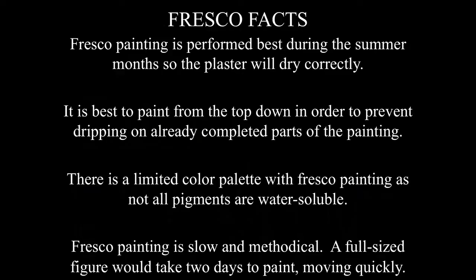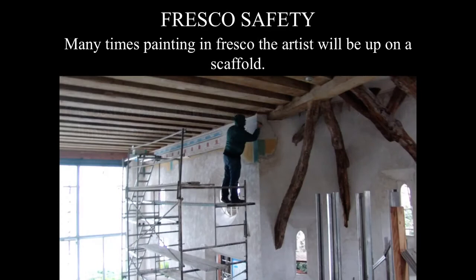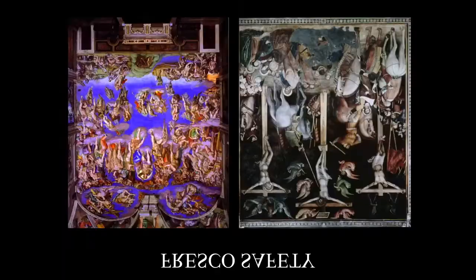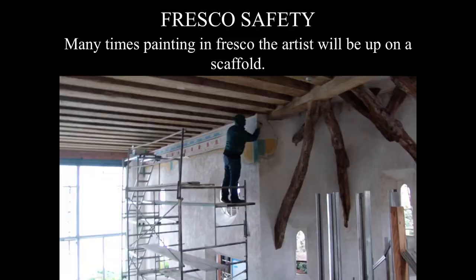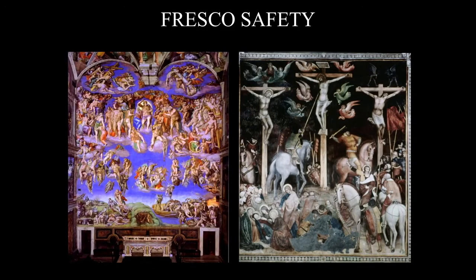Fresco is also fairly dangerous — you can see individuals up on scaffolding, sometimes painting an altar wall 40 feet high or a ceiling 50 feet high. Our natural inclination after painting something is to take a step back and admire the work, and you can easily fall. In fact, that's what happened to Michelangelo when he painted the altar wall of the Sistine Chapel — he fell off the scaffolding, but was okay. We have other artists such as Barna da Siena who died from a fall while painting.